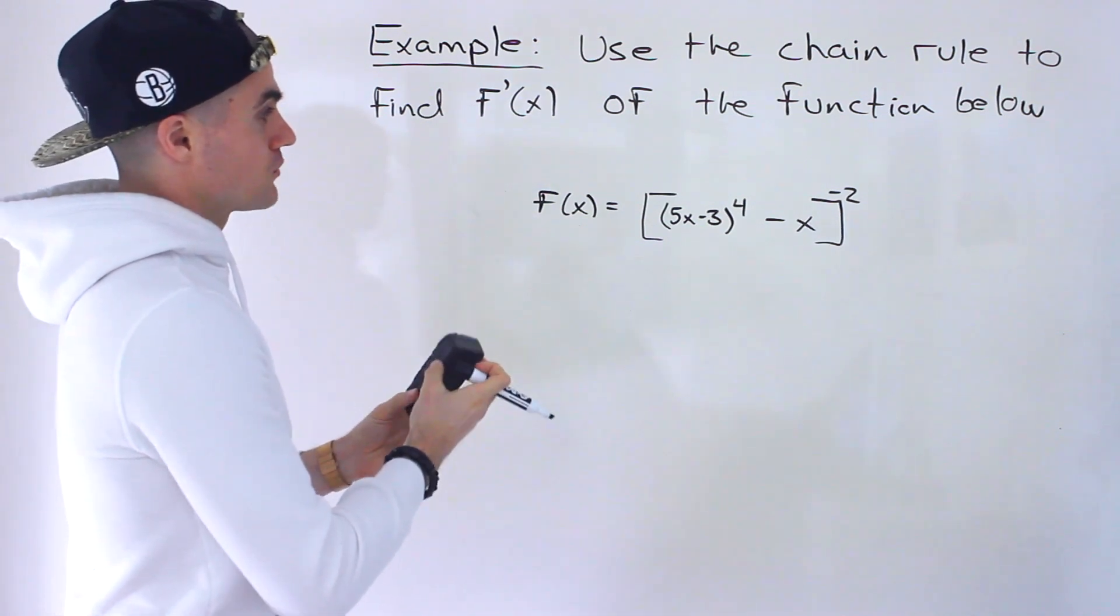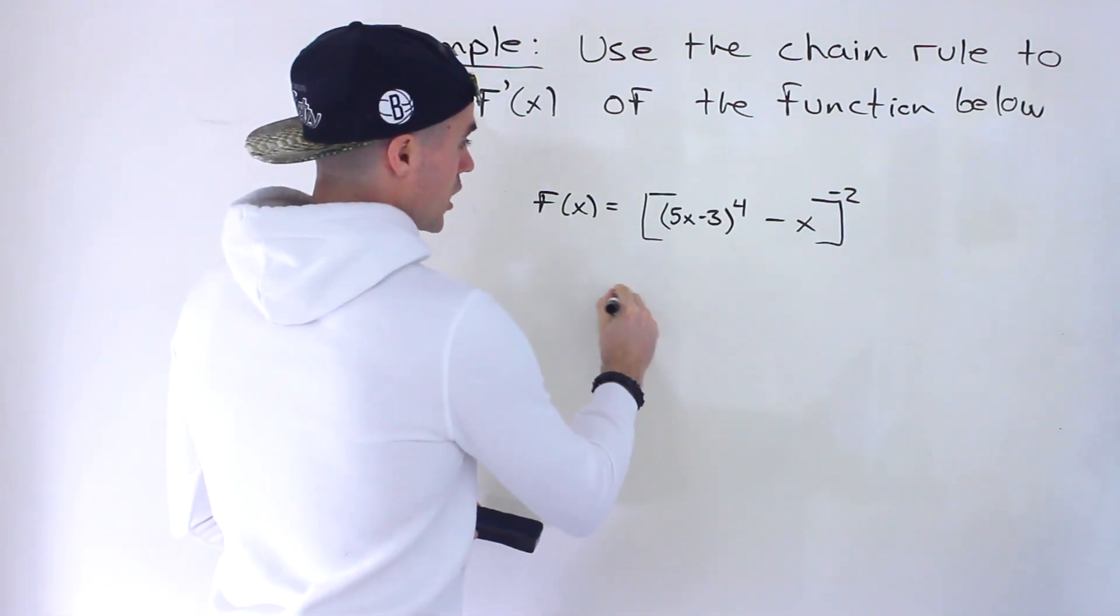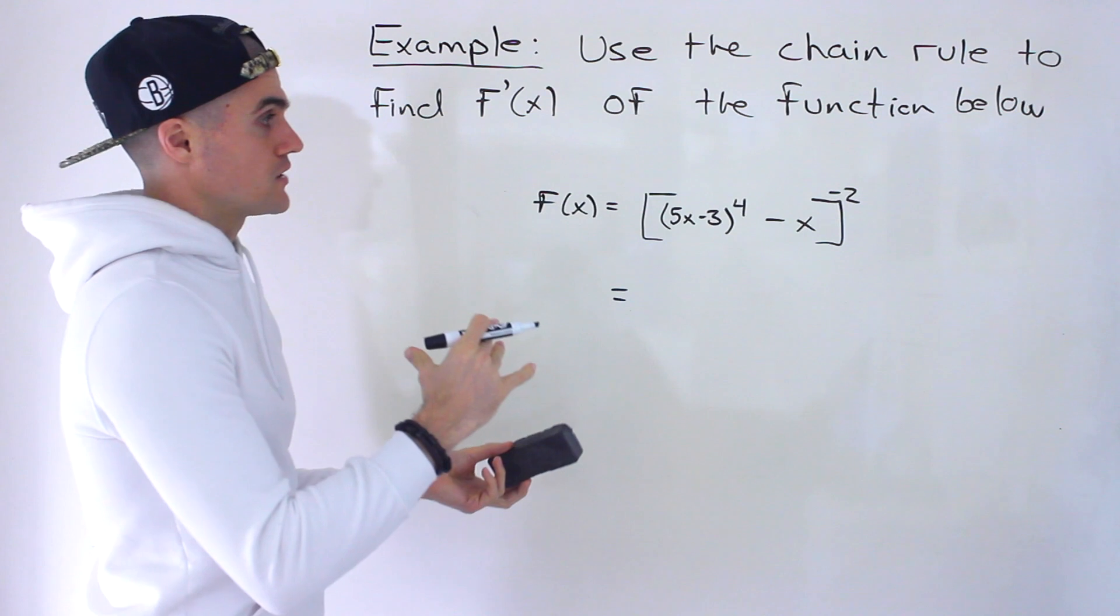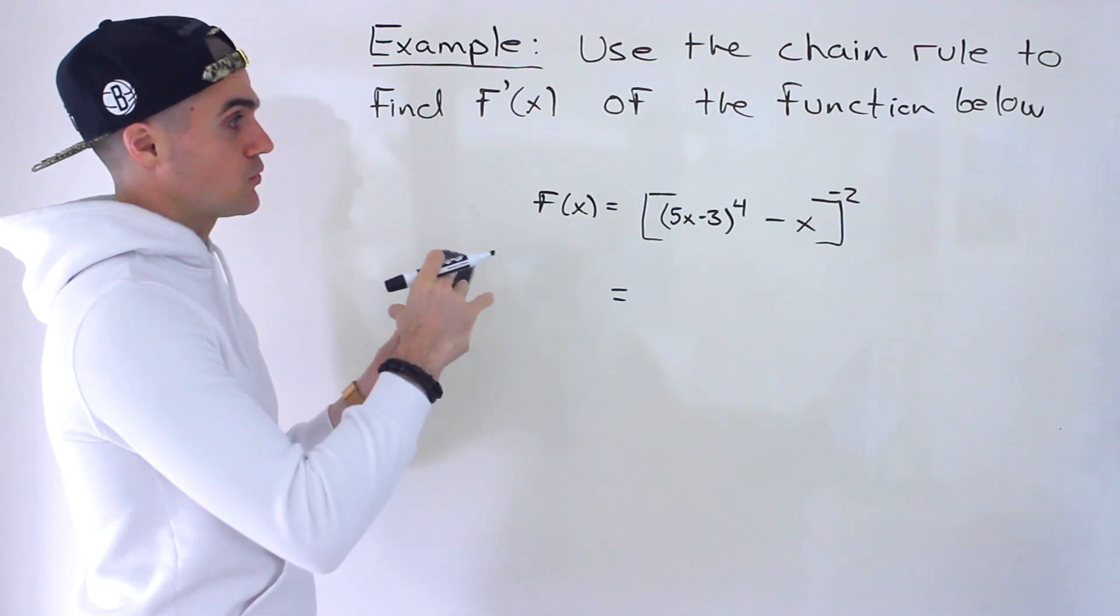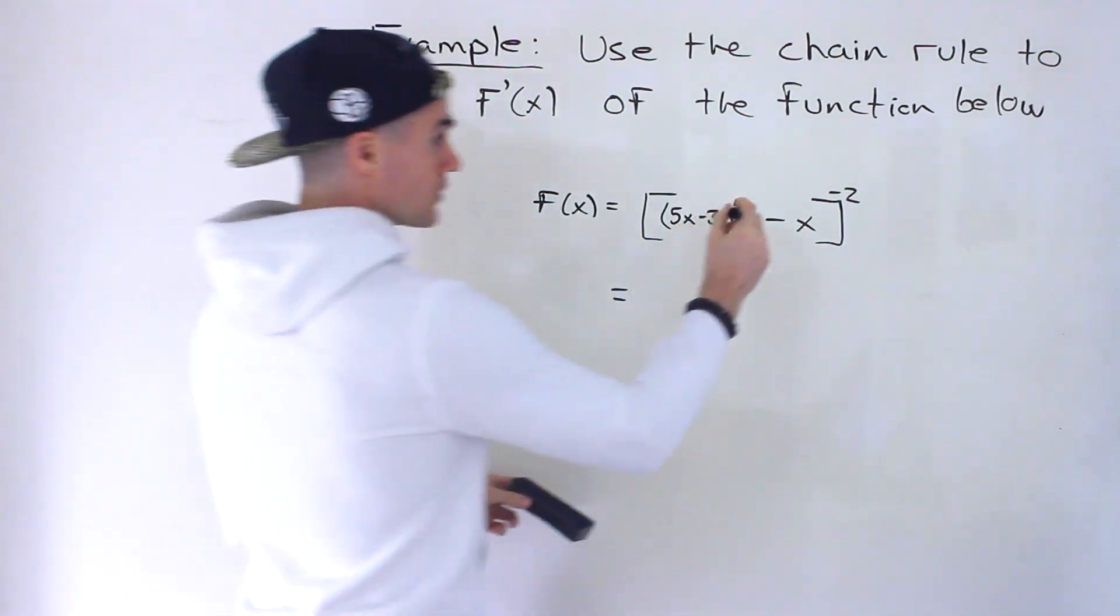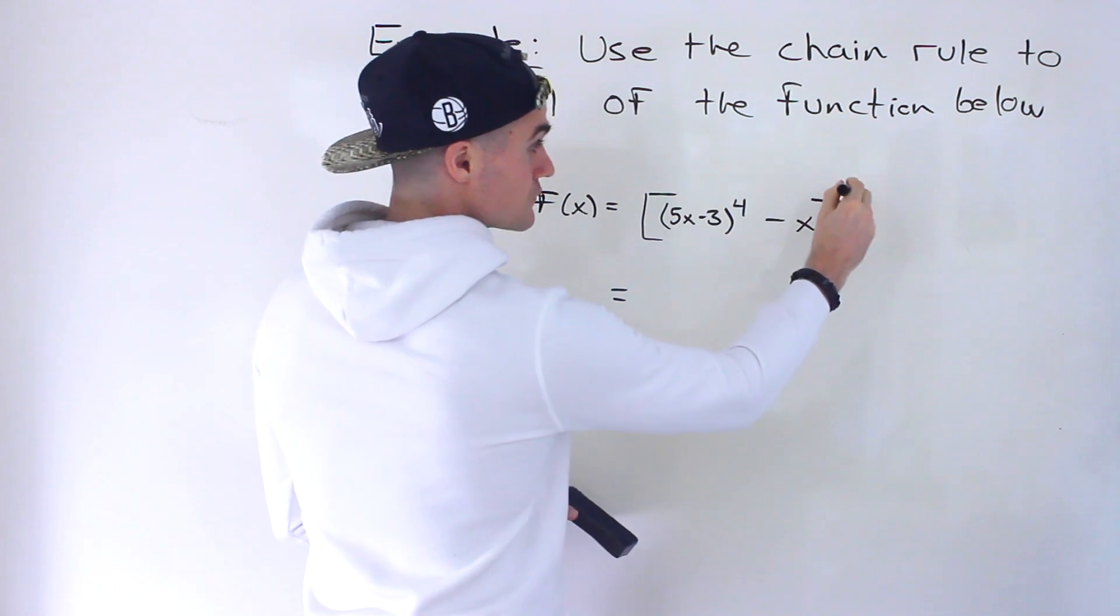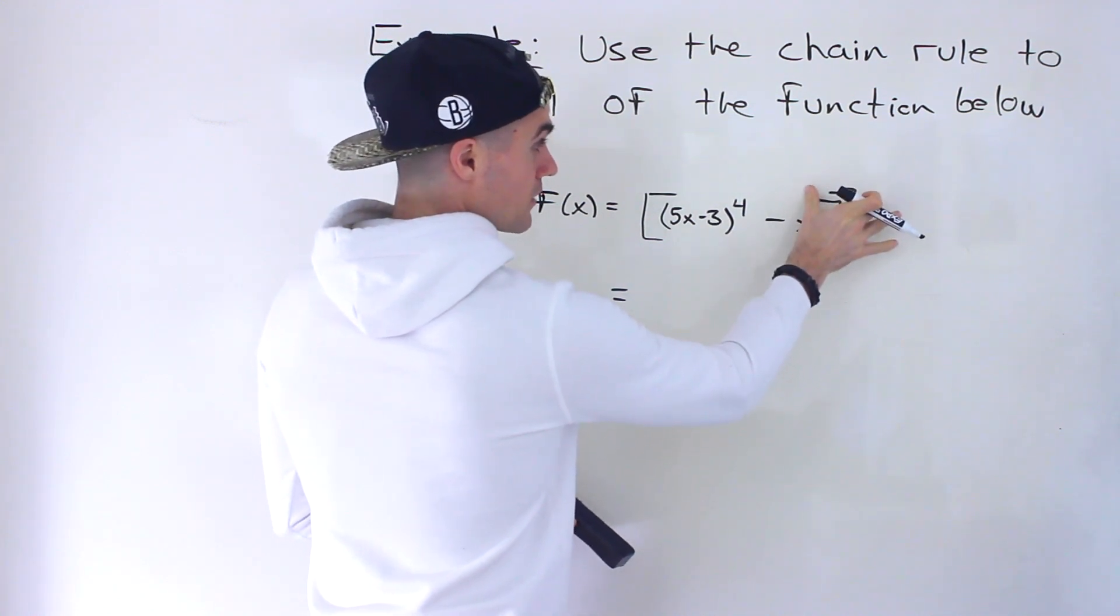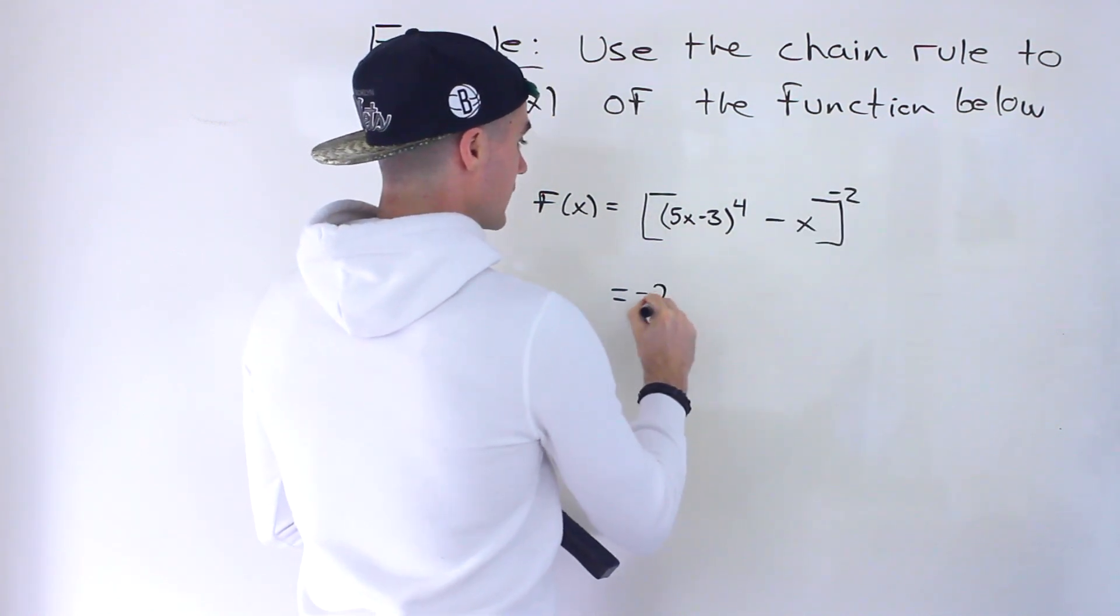So when you're doing the chain rule, as we've shown in previous videos, you want to deal with the outer function first. So notice we got this function to the power of negative 2. So something to the power of negative 2, we would bring down the negative 2. That inner function would stay the same.